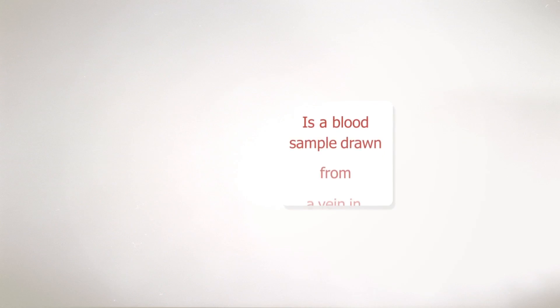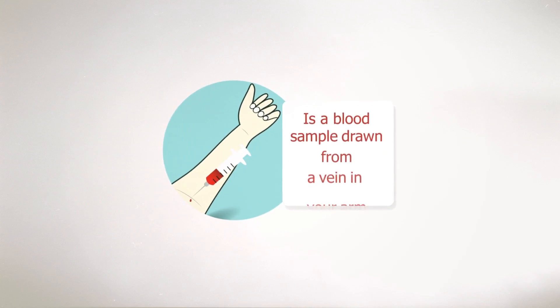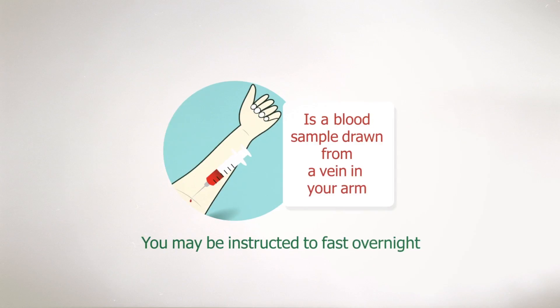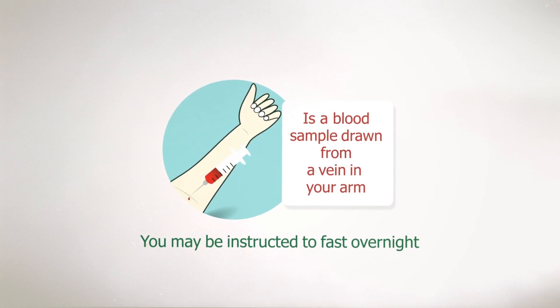The sample required is a blood sample drawn from a vein in your arm. You may be instructed to fast overnight.